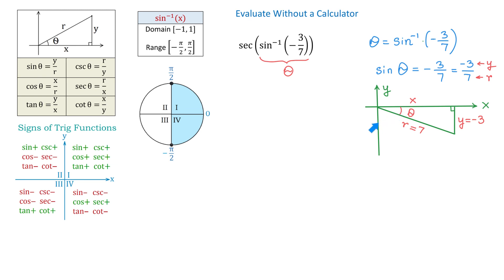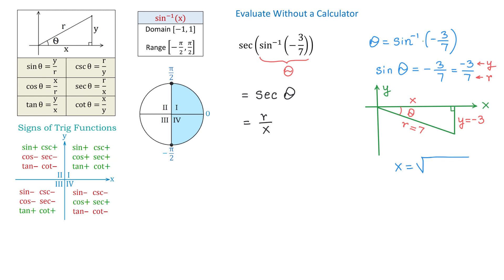Angle theta is the angle of the triangle that we need to use to find the value of secant. By definition, secant of angle theta is r over x, and we know that r is 7. Now to find x in this right triangle we will use the Pythagorean theorem. Keeping in mind that in quadrant 4 x is positive, we will have x equals the square root of r squared minus y squared.